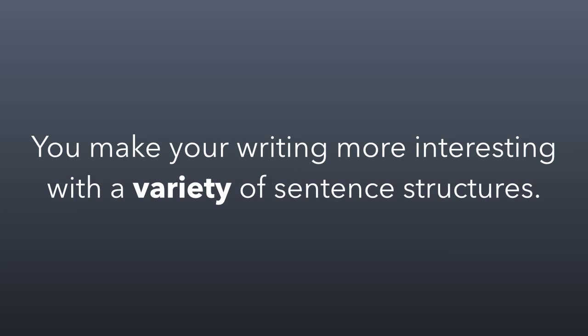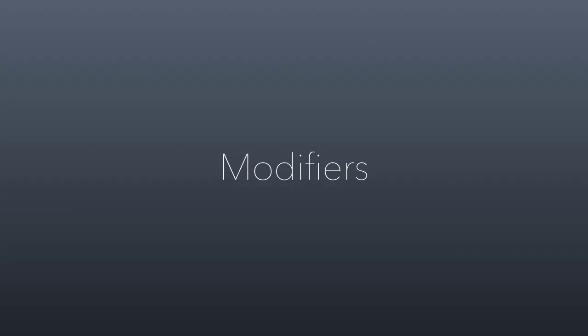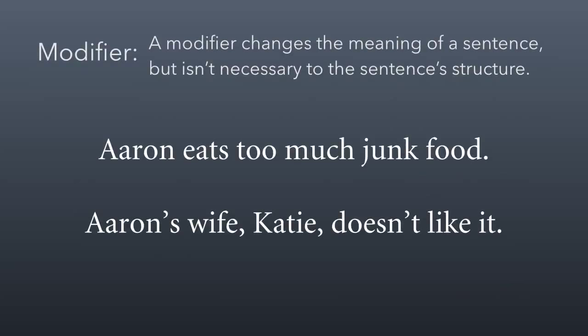Moving on from sentences, let's talk about another aspect within a sentence: the modifier. We talked about complements — many complements are what we would consider to be modifiers. A modifier is something in the sentence that changes its meaning but isn't necessary to the sentence's structure. For example, 'Aaron eats' is sufficient on its own, so 'too much junk food' is a modifier. We can delete it and the sentence still works, but by adding 'too much junk food' we're changing the meaning — that's what makes it a modifier.